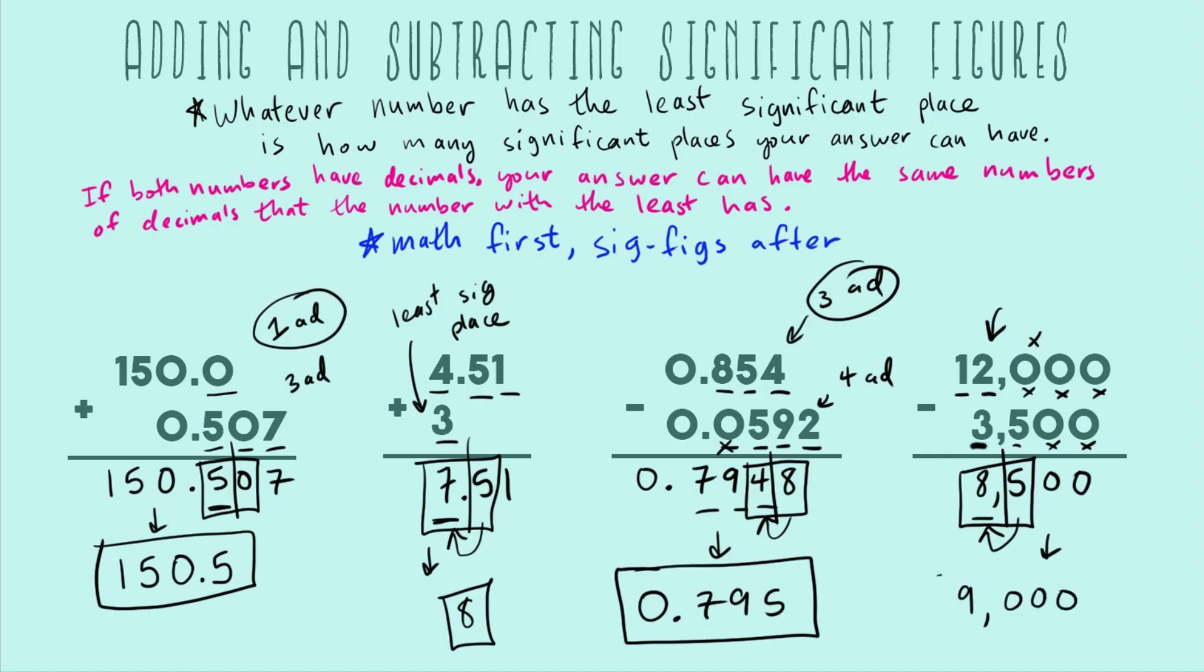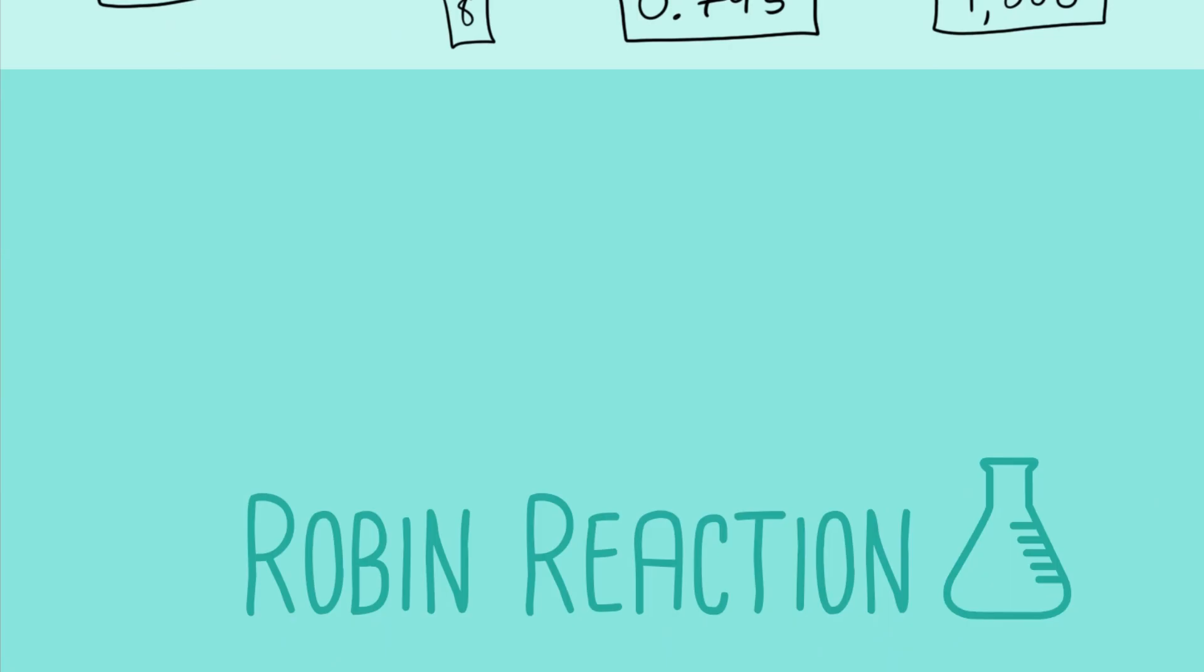This is interesting because both of these original numbers, 12,000 and 3,500, they have two sig figs each. But that doesn't matter because the rule for addition and subtraction is not based on just number of sig figs. Even though both of our numbers in the beginning had two sig figs, this guy only has one. That's completely correct because we just have to pay attention to the place and not the overall number of sig figs. That's all I have for you on this topic. I hope you enjoyed it and have a great day. Bye.